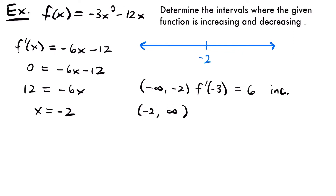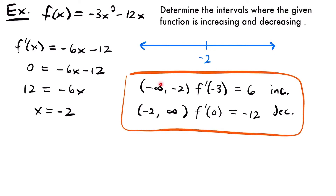Now let's test the second interval. I'll pick x equals 0. So f prime of 0 equals 0 times negative 6 minus 12, which is negative 12. Since that slope is negative, the function is decreasing on that interval. So the answer is: our function is increasing on negative infinity to negative 2, and decreasing on negative 2 to infinity.